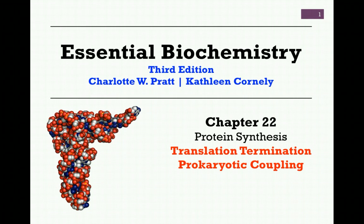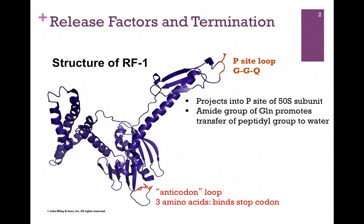We're continuing our studies in Chapter 22 on protein synthesis, and in this lesson we're concerned with the termination of translation, as well as the coupling of transcription and translation in prokaryotic systems. Important in the process of termination are certain release factors. Here we're looking at a ribbon diagram of release factor 1, which is responsible for recognizing the stop codon.